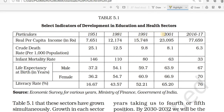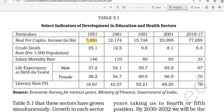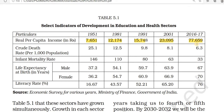Here you can see a table covering the years 1951, 1981, 1991, 2001, and 2016-17. The indicators shown are per capita income, death rate, infant mortality rate, life expectancy at birth, and literacy rate. Per capita income in 1951 was 7,651. It increased to 12,174 in 1981, 15,748 in 1991, around 23,000 in 2001, and 77,659 in 2016-17. This shows that our per capita income has been increasing.